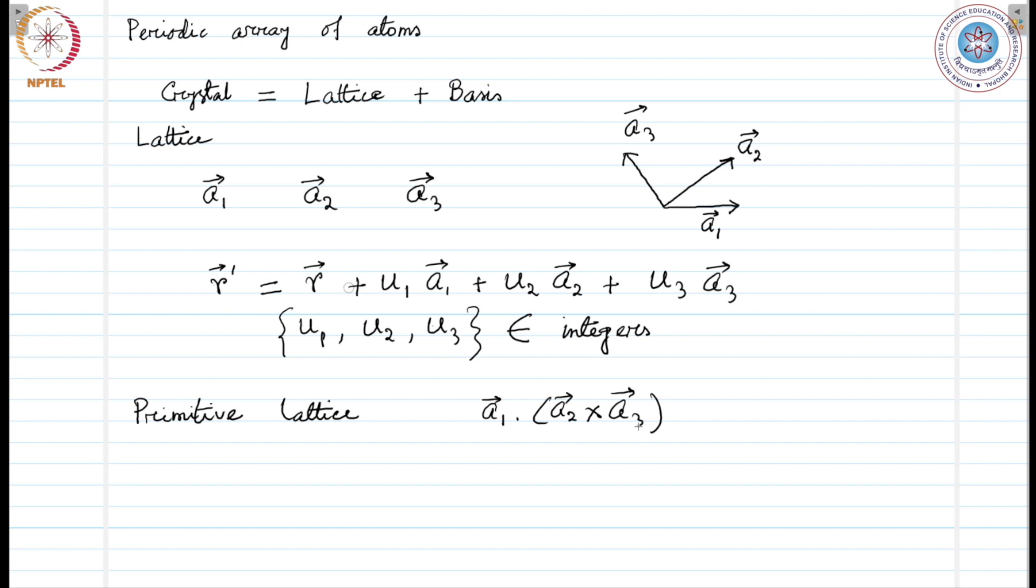Non-primitive translation vectors are often used. That means those would be bigger than these translation vectors and may point along some other direction. They are often used if that helps understand the symmetry of the system in a better way. Otherwise primitive lattice is fine. We can use primitive lattice. Now let's go to the discussion of basis and the idea of crystal structure.